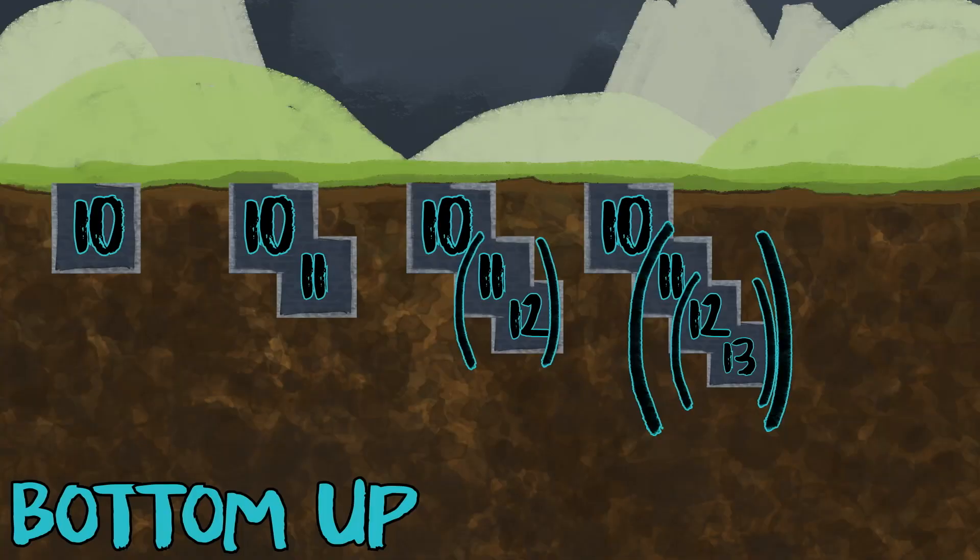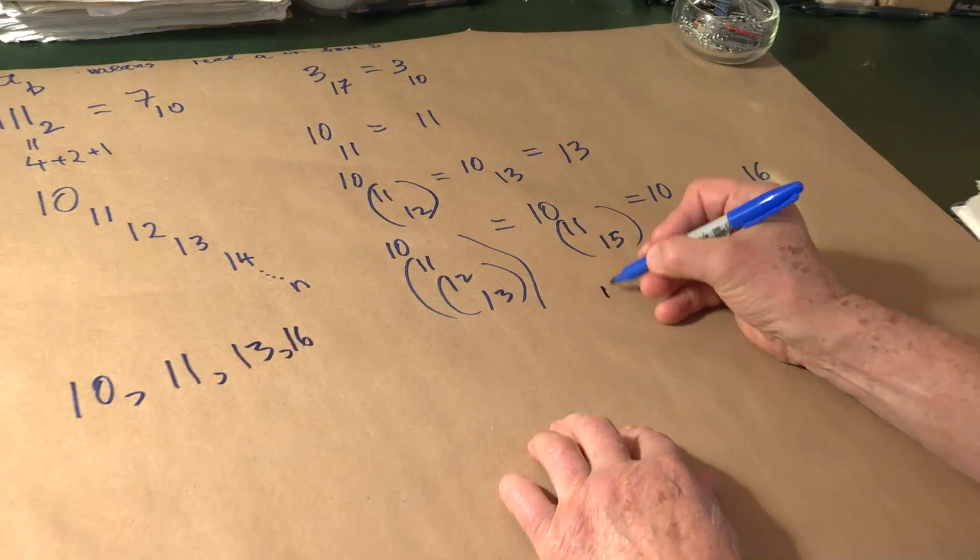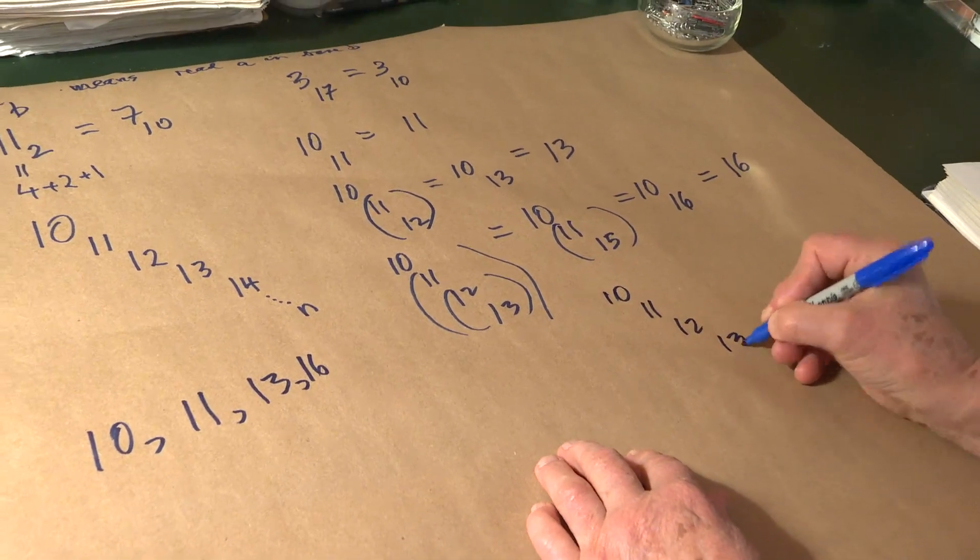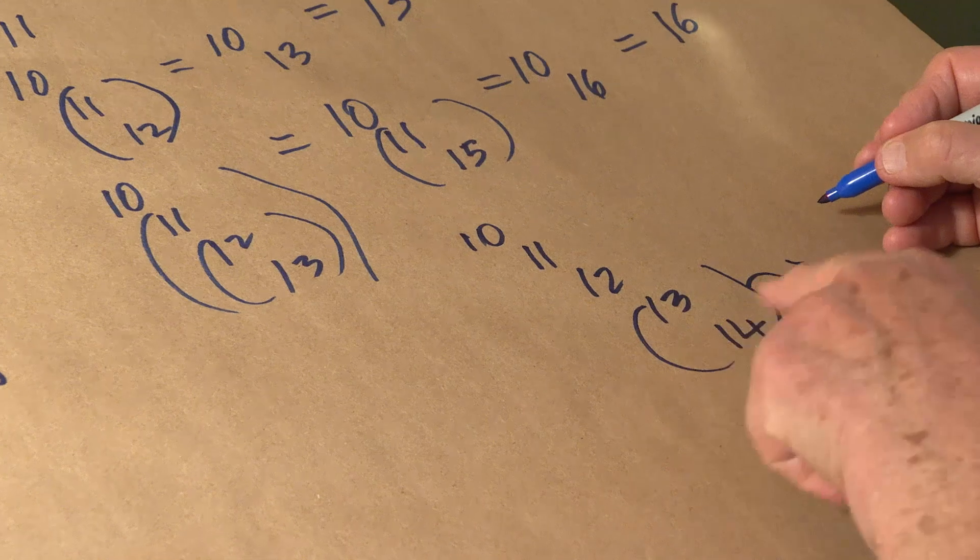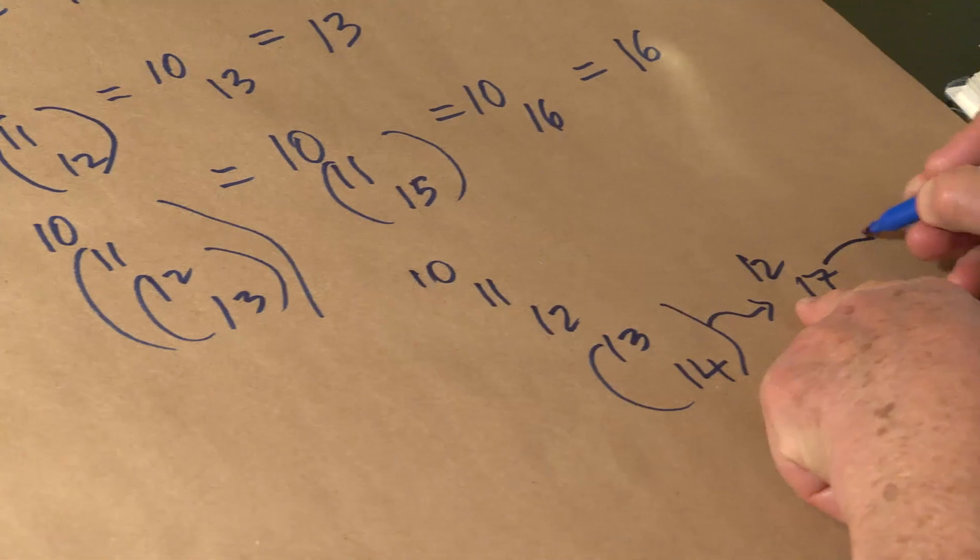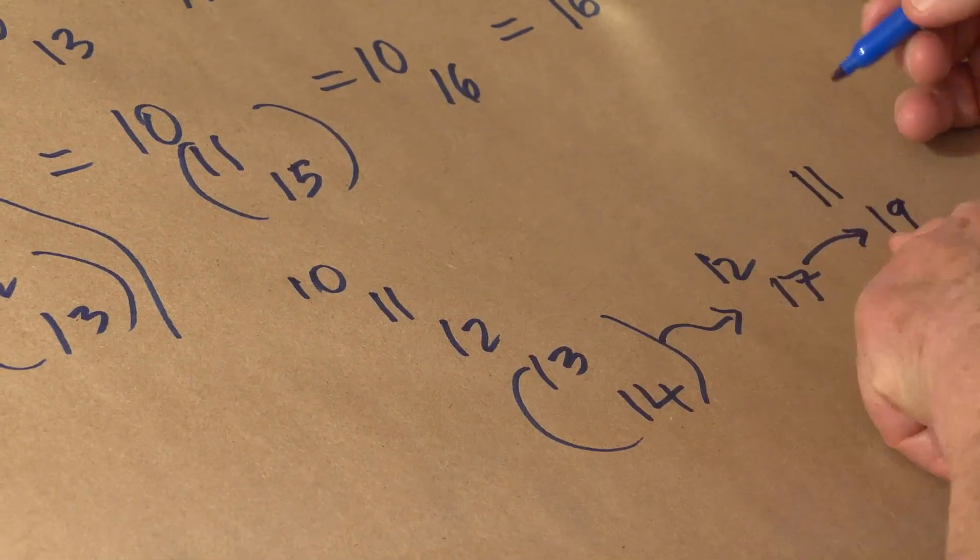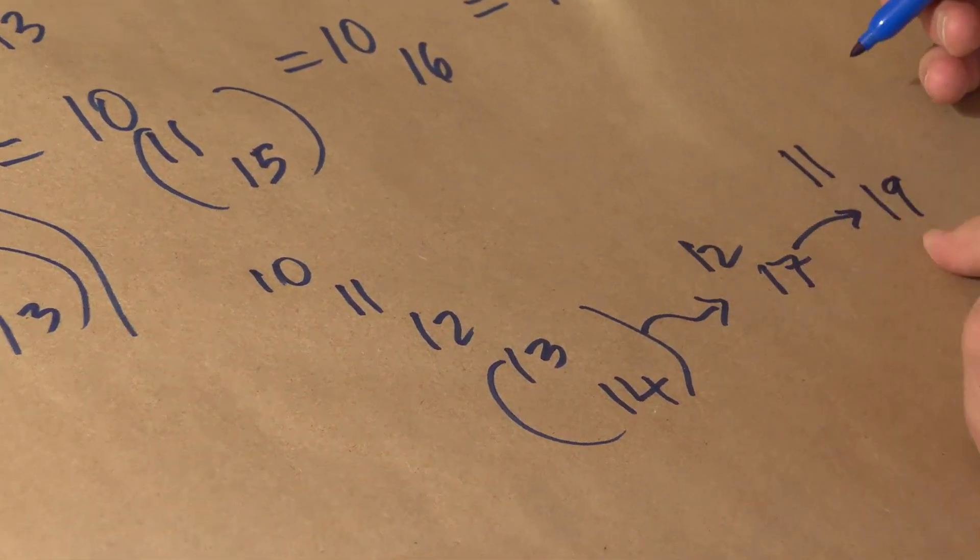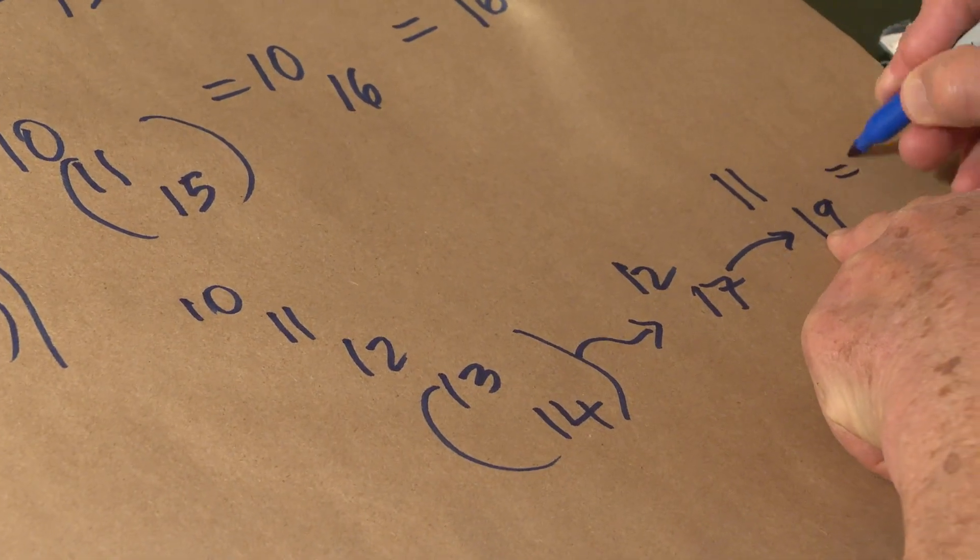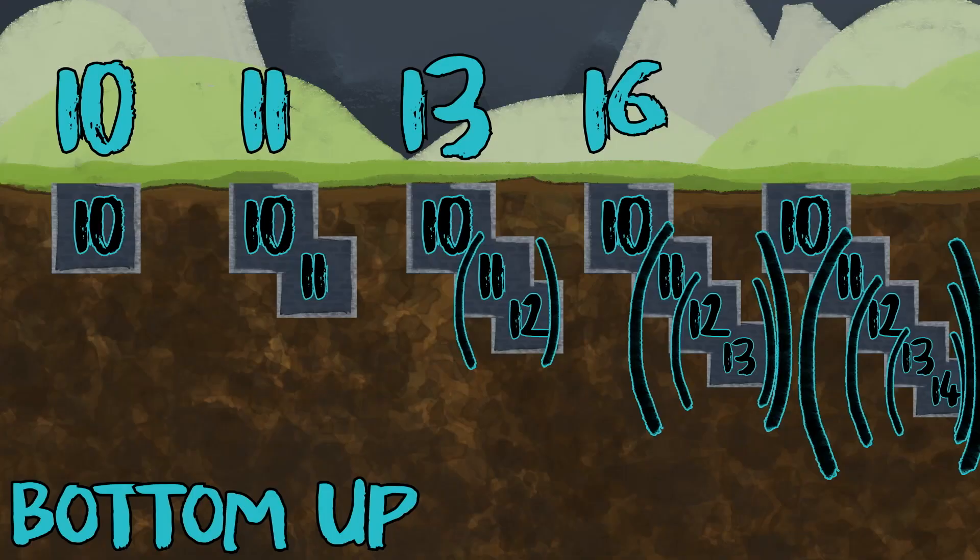So the sequence that we're getting starts with 10, and then we get 11, 13, and 16. Let's do another one. So 10 sub 11, 12, 13, 14. 13 sub 14 is 14 plus 3, it's 17. 12 sub 17 is 17 plus 2 is 19. Now we have 11 sub 19. 11 sub 19, that 1 is 19, that 1 makes 20. So that's 20. And then we have 10 sub 20, which is equal to 20. So the next term in the sequence is 20. And we keep going. And the question is, how big do these numbers grow?